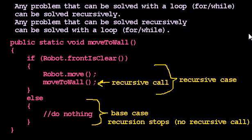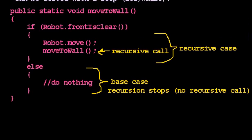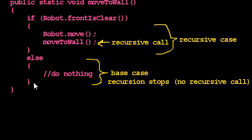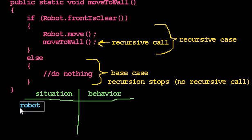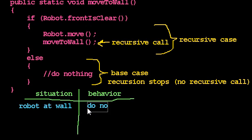We're going to see that in every recursive method we write. Let's see what moveToWall actually does. I find the easiest way is to make a little chart of all the different situations the robot could be in, and what the method does. One possible situation: the robot is already at the wall — the front is not clear. Looking at the code: if the front is clear, do this; but the front isn't clear, so we do nothing. So when the robot is at the wall, this code does nothing.